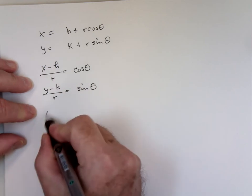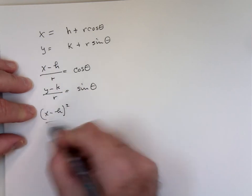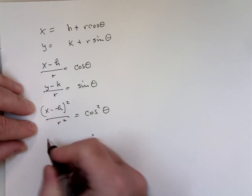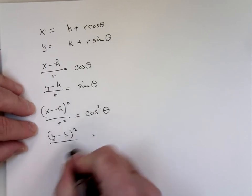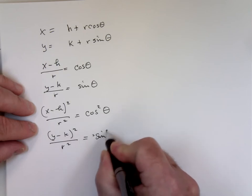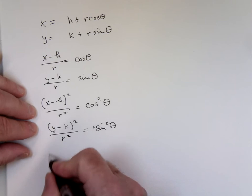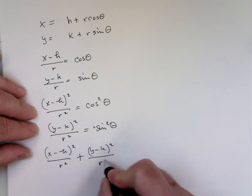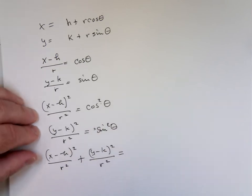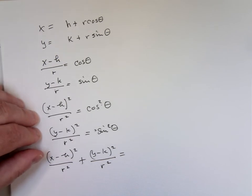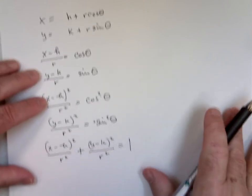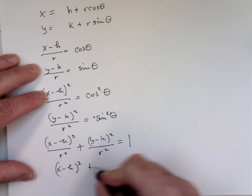Square both sides — this is a common technique when you have these kinds of problems. Square both sides and add them. You're taking advantage of the fact that cosine squared plus sine squared equals one. And you've eliminated the parameter. You have the standard form of a circle whose center is (H, K) and whose radius is R. You take the R squared to the other side, which is probably what WebAssign is looking for.